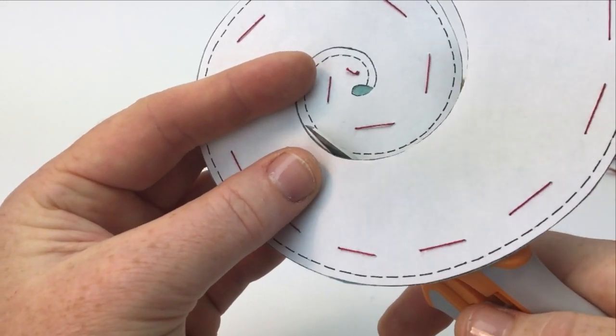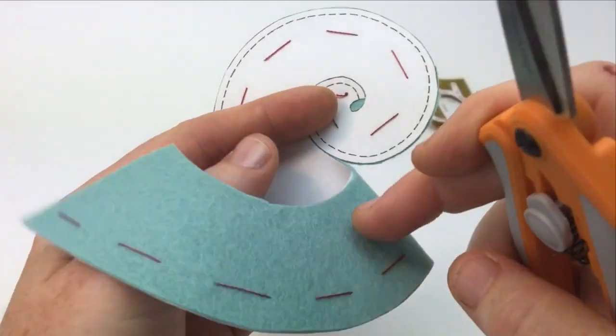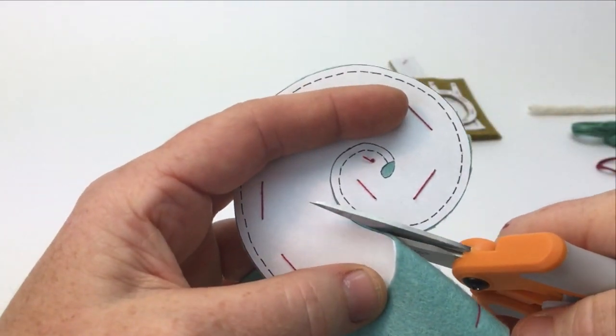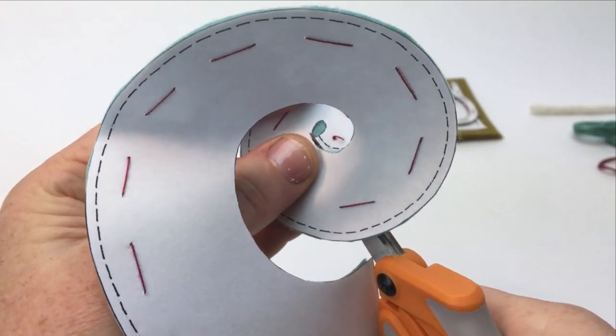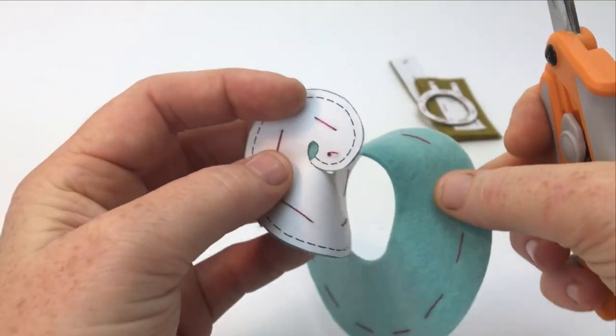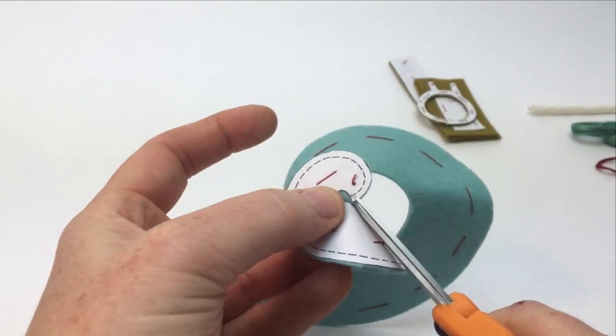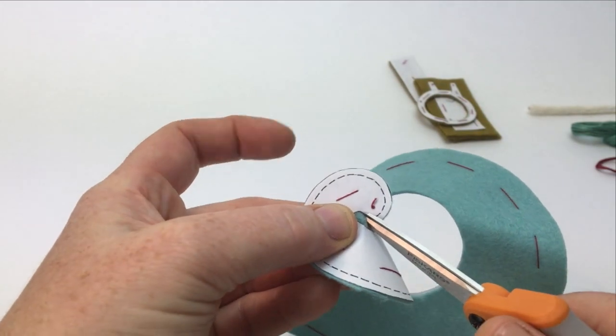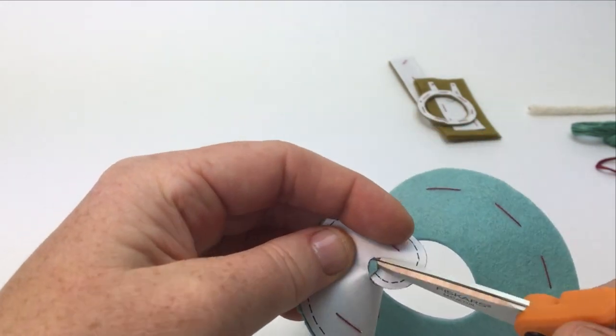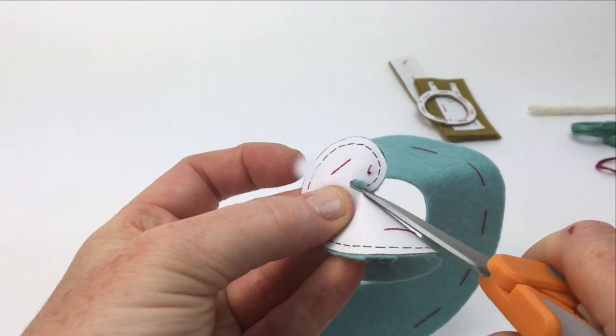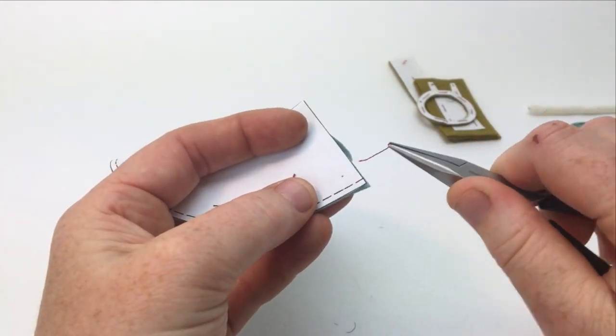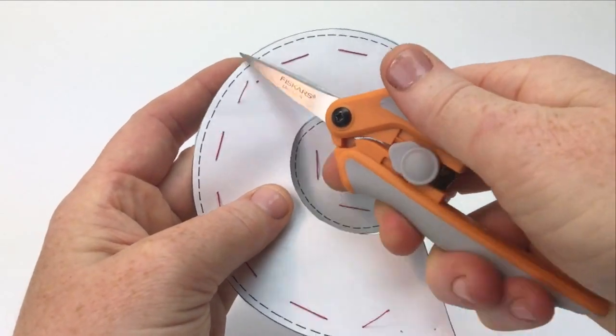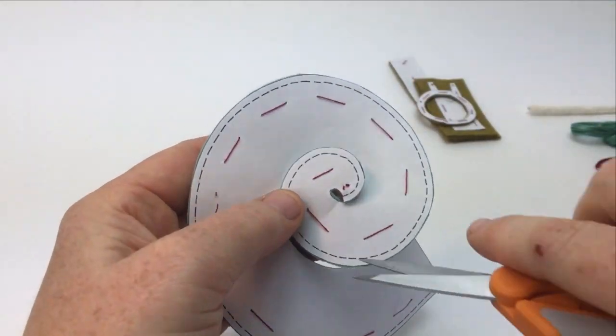When you get part way around the spiral, you'll probably want to fold the beginning portion out of your way so you can continue cutting into the center. When you reach the center of the spiral, this is where the sharp point of these scissors really comes in handy. You can get right in there with the tips of the scissors and cut out tiny little shapes like this. Once you've finished cutting, you can use your scissors and your pliers to take out the basting stitches and separate the paper from the fabric.